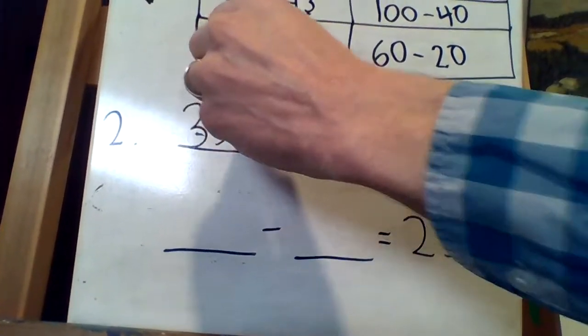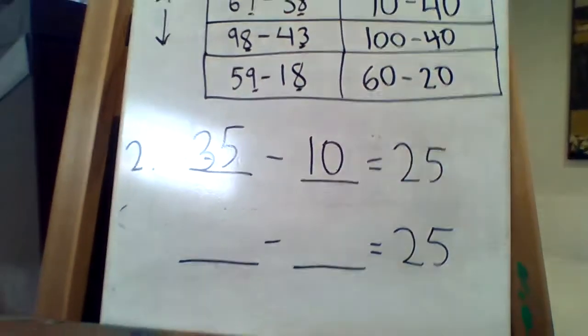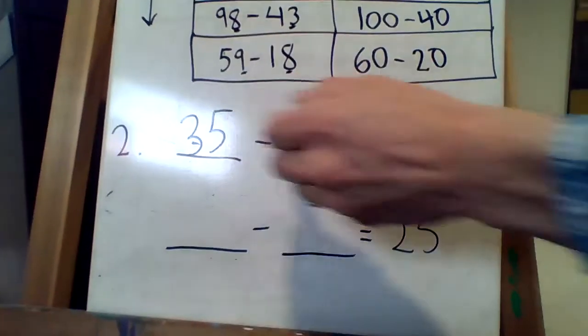35 subtract 10 equals 25. Right? Because you take one ten away. There you go.